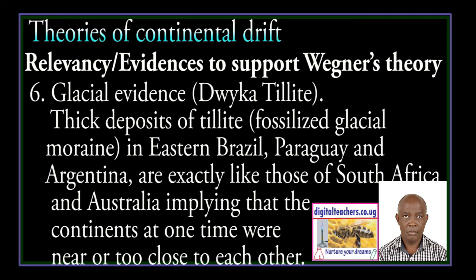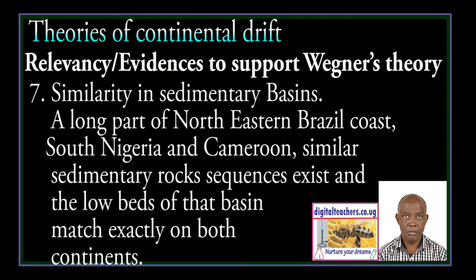The Glossopteris evidence: the thick deposit of fossilized Glossopteris flora in eastern Brazil, Paraguay and Argentina are exactly like those of South Africa and Australia, implying that the continents at one time were near or close to each other. Similarities in sedimentary basins: along the northeastern Brazil coasts, South Nigeria and Cameroon, similar sedimentary rock sequences exist. The coal belts of the best match exactly on both continents.